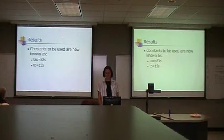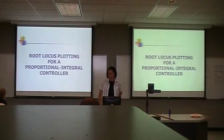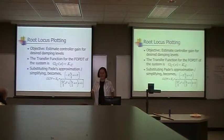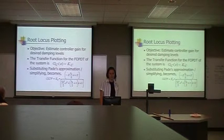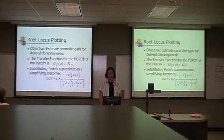Now I'm going to go through the root locus plotting for the proportional-integral controller. The root locus objective is to estimate the controller gain for desired damping levels. It uses a system transfer function for first order plus dead time of the second order, and you also substitute pole-zero approximation and lots of algebra.